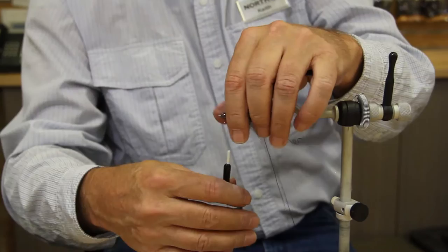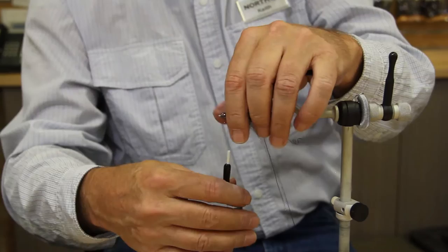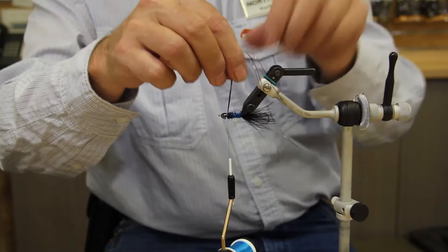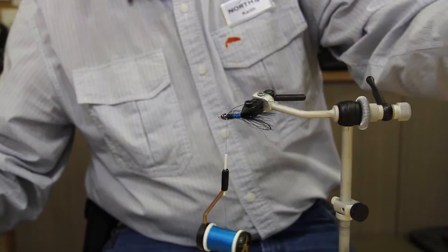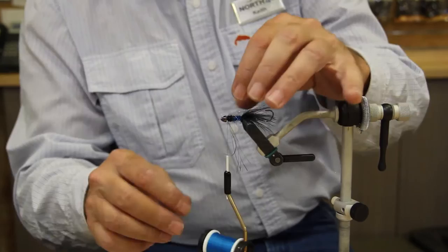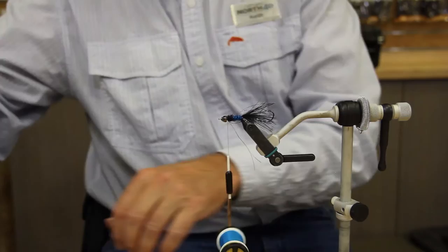You're going to double that back. Tie it off. Then you're going to just take your excess so that everything is the same length. Cut it off. Next we're going to do is the same thing again on top.